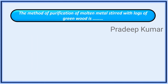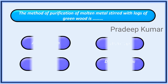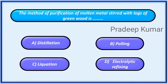The method of purification of molten metals stirred with logs of green wood is — Options: A. Distillation, B. Pooling, C. Liquation, D. Electrolytic refining.